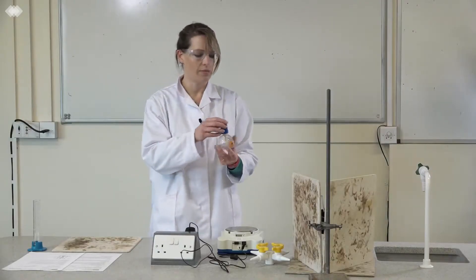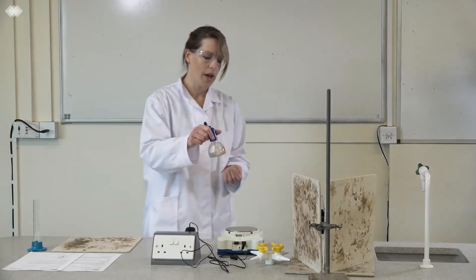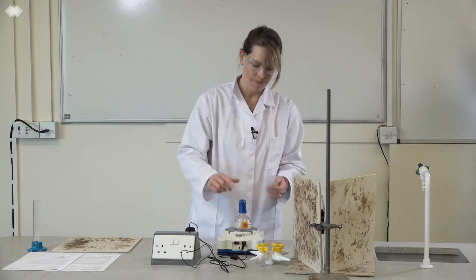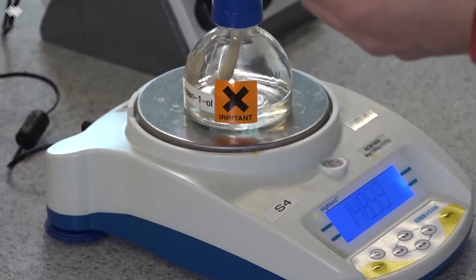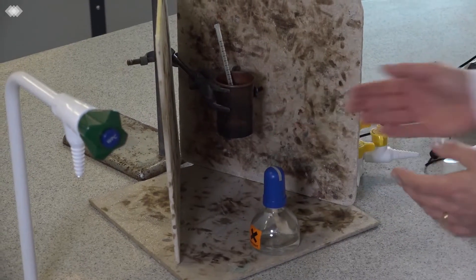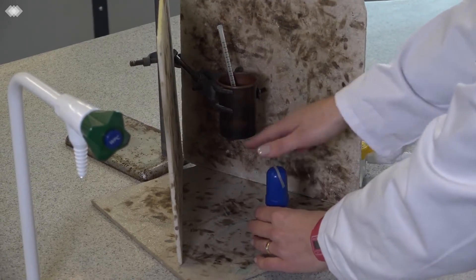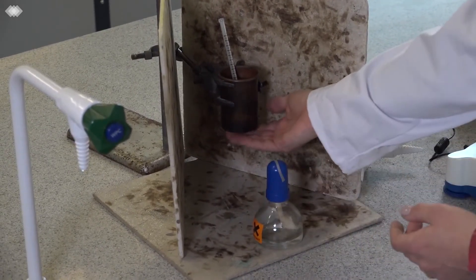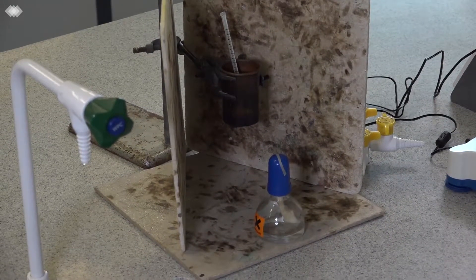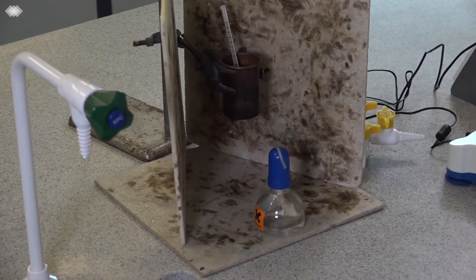Next thing to do is to take the spirit burner containing the alcohol and that needs to be weighed on a balance with the lid on. Record the mass. Now it's important that you decide the height of the calorimeter so it's not too high above the spirit burner because you want any of the heat to go directly into the calorimeter and not be lost into the surroundings.